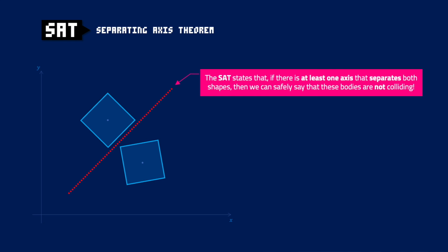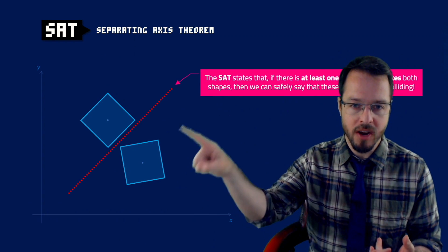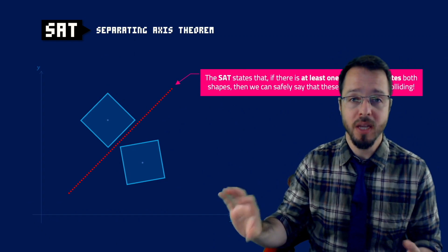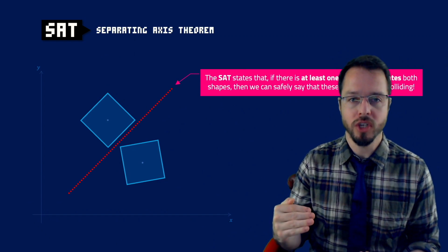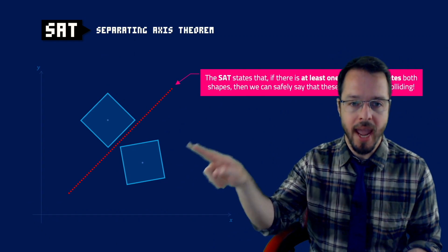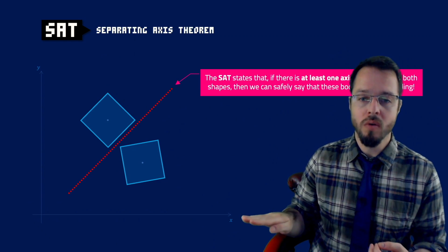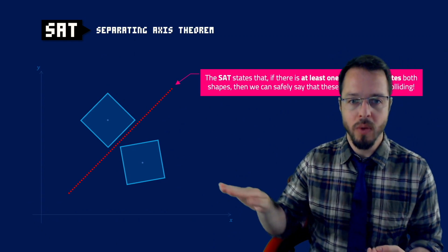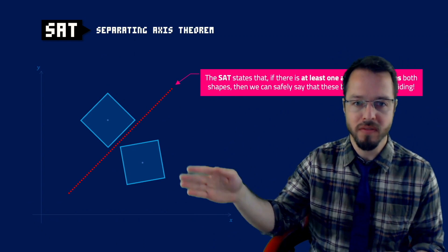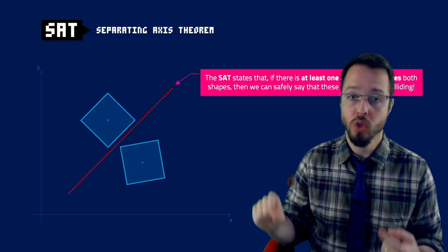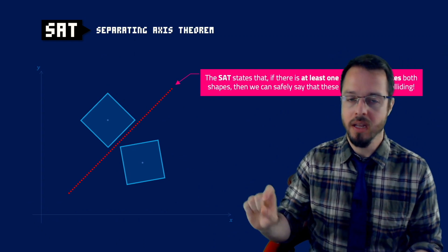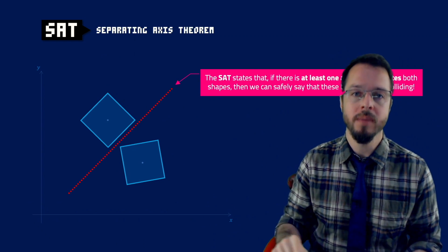The SAT says that if we have one axis — if there is one axis that we can find that separates those two bodies — then there is no collision between those bodies. The SAT algorithm states that if there is at least one axis that separates both shapes, then we can safely say that these bodies are not colliding. For the human brain it's very easy to just use your eyes and visualize that there is an axis separating these two bodies, but mathematically we have to come up with an algorithm — a step-by-step recipe — to find what is that axis separating these two bodies.